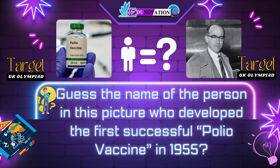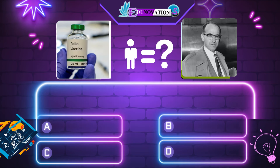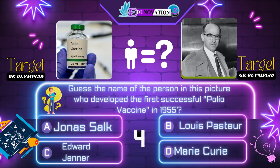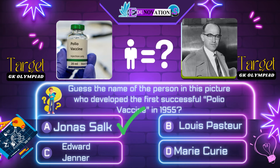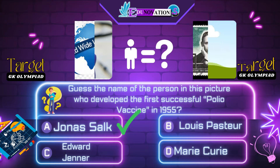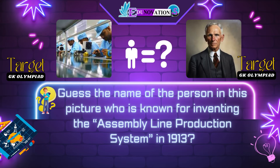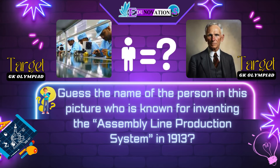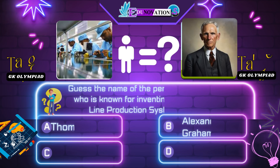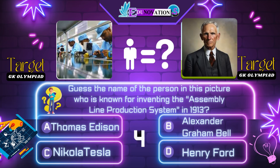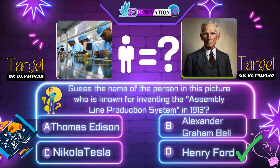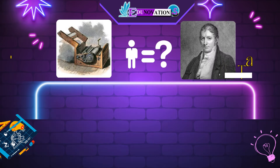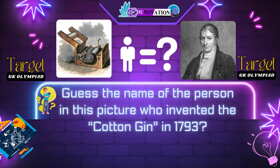Now next question. Guess the name of the person in this picture who developed the first successful polio vaccine in 1955. Your options are: A. Thomas Edison, B. Alexander Graham Bell, C. Nikola Tesla, D. Henry Ford. Time's up. Correct answer is D. Henry Ford.